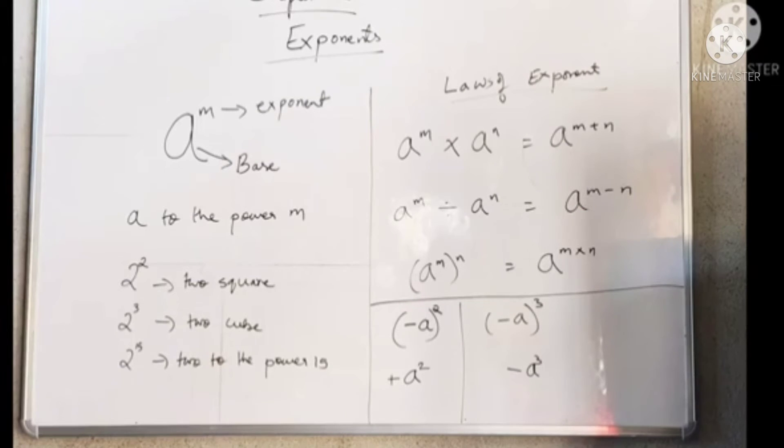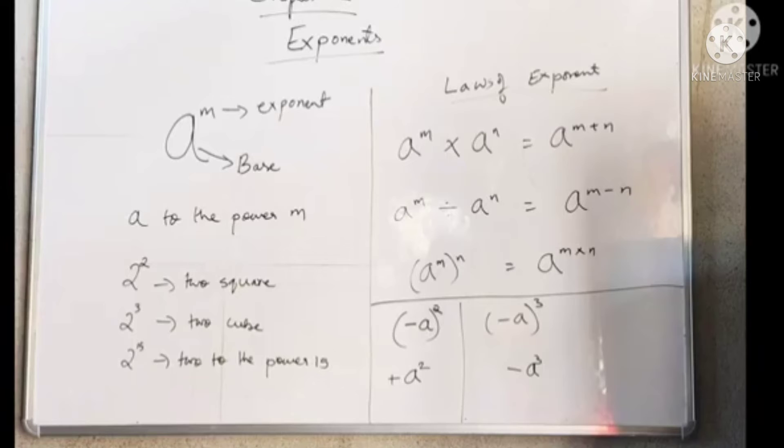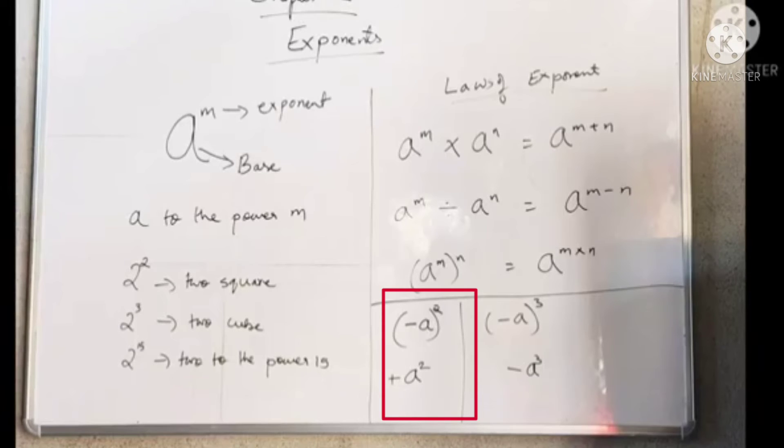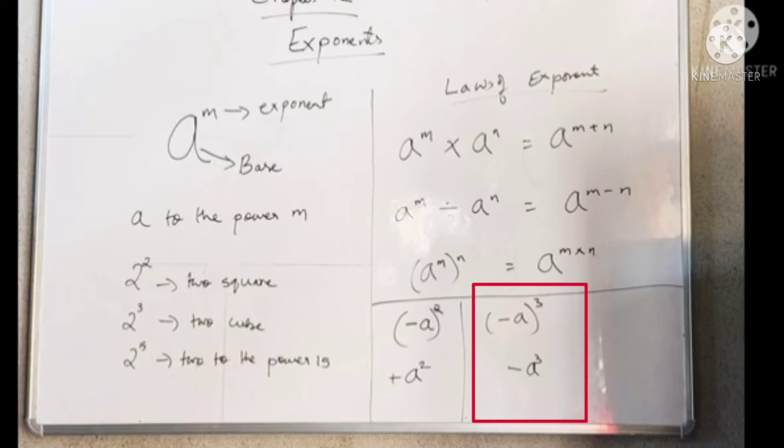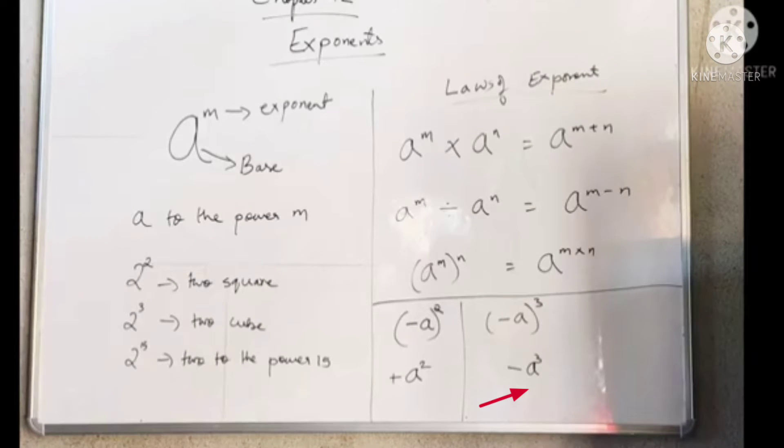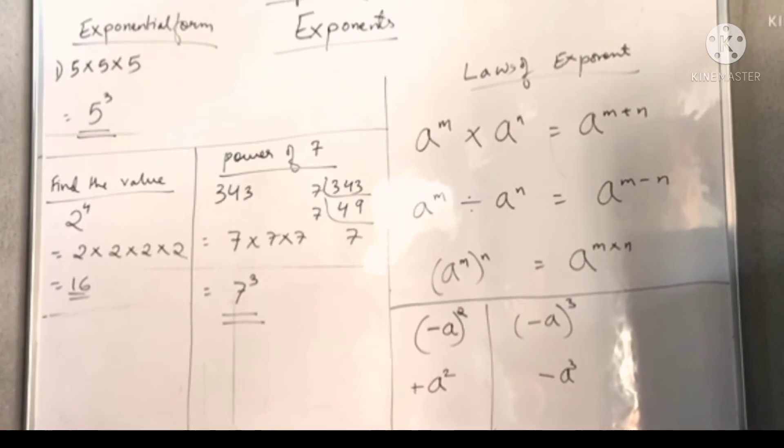One more thing to keep in mind: when the bases are negative, we need to check the power. If the power is an even number, the answer will always be positive. If the power is an odd number, then the answer will always be negative.